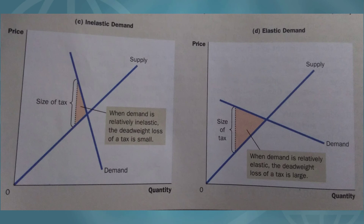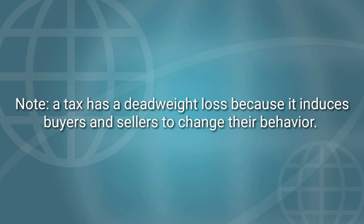Now let's look at how the elasticity of demand affects the size of the deadweight loss. Here the supply curve and the size of the tax are held constant. In panel C, the demand curve is relatively inelastic and the deadweight loss is small. In panel D, the demand curve is more elastic and the deadweight loss from the tax is large. A tax has a deadweight loss because it induces buyers and sellers to change their behavior — the tax raises the price paid by buyers so they consume less, and lowers the price received by sellers so they produce less. Because of these changes in behavior, the size of the market shrinks below the optimum. The greater the elasticities of supply and demand, the greater the deadweight loss of a tax.